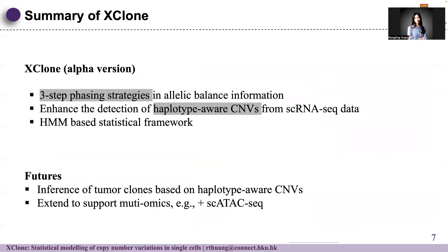In summary, the phasing strategy on allele balance information works well and the three-step phasing strategy is quite helpful. This enhances the detection of haplotype-aware copy number variations from single-cell RNA sequencing data. The HMM framework in XClone helps call copy number variation states accurately. The future plan for XClone is inference of tumor clones based on haplotype-aware copy number variations, and potentially extending support to multi-sample or mixed settings.